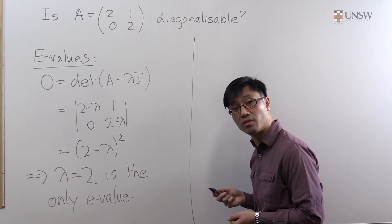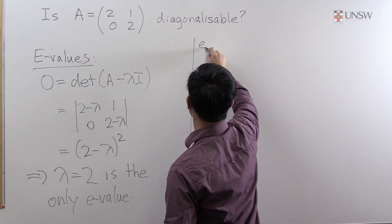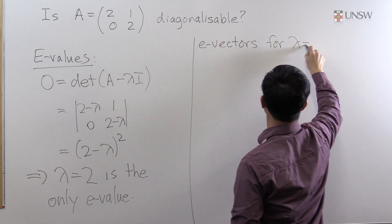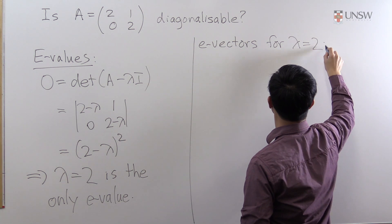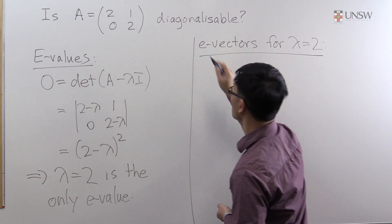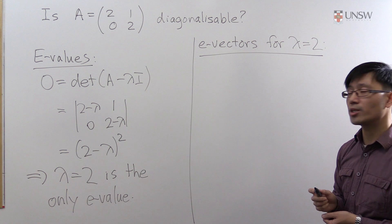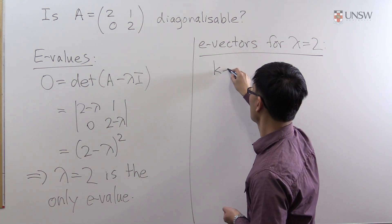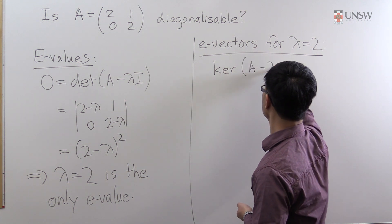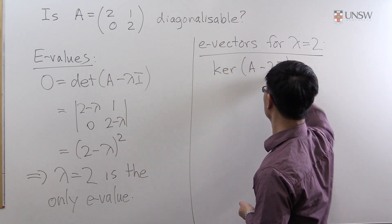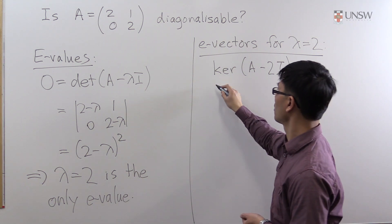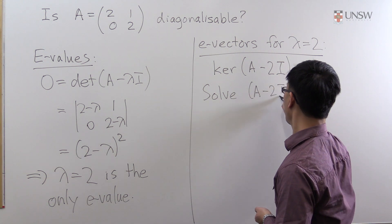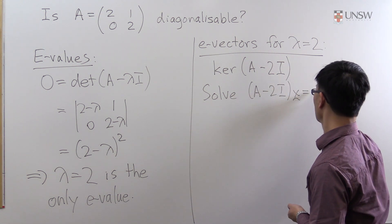So let's compute the eigenvectors now. Eigenvectors for λ = 2. So remember, how do you get the eigenvectors? They're the non-zero vectors inside the kernel of A - 2I. So we need to solve (A - 2I)x = 0.